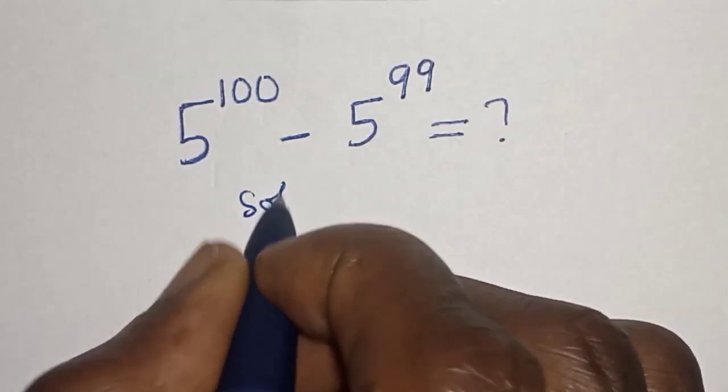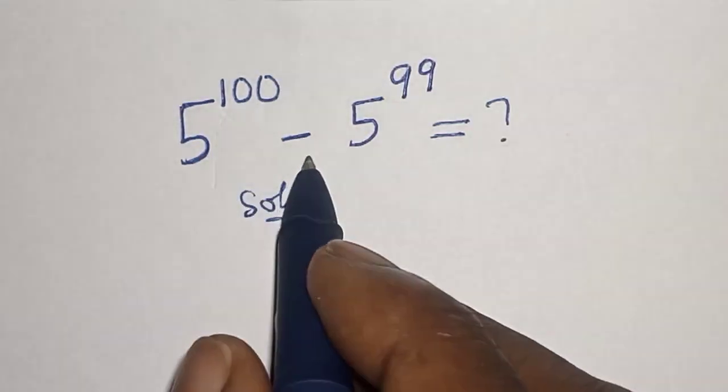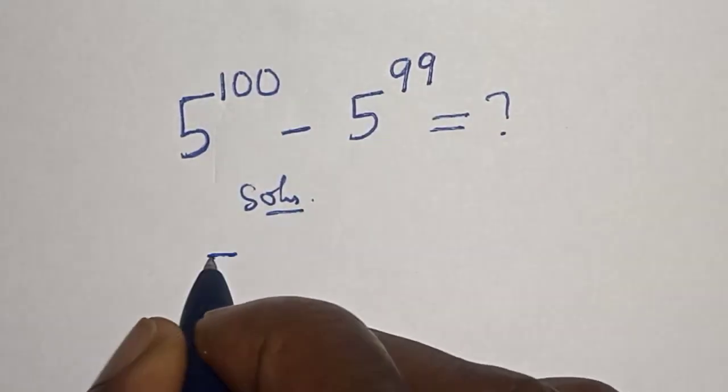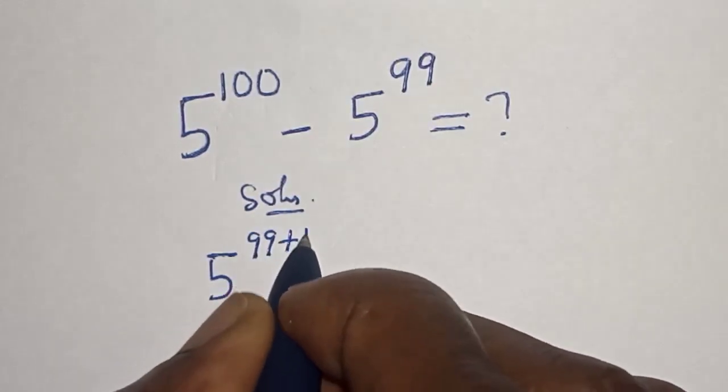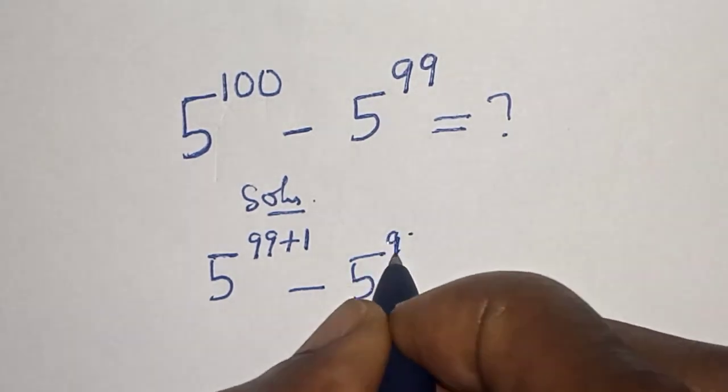Solution. 5 raised to power 100 minus 5 raised to power 99. This can be written as 5 raised to power 99 plus 1 minus 5 raised to power 99.